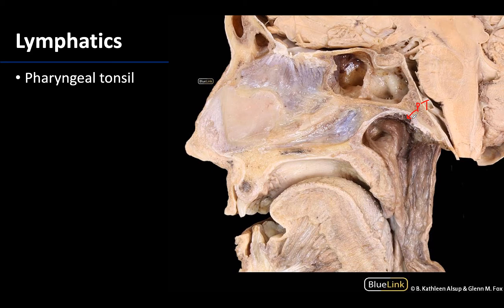age 5 and will atrophy thereafter. So most individuals of more advanced ages will have minimal lymphoid tissue here, which is what we can see in this particular portion.